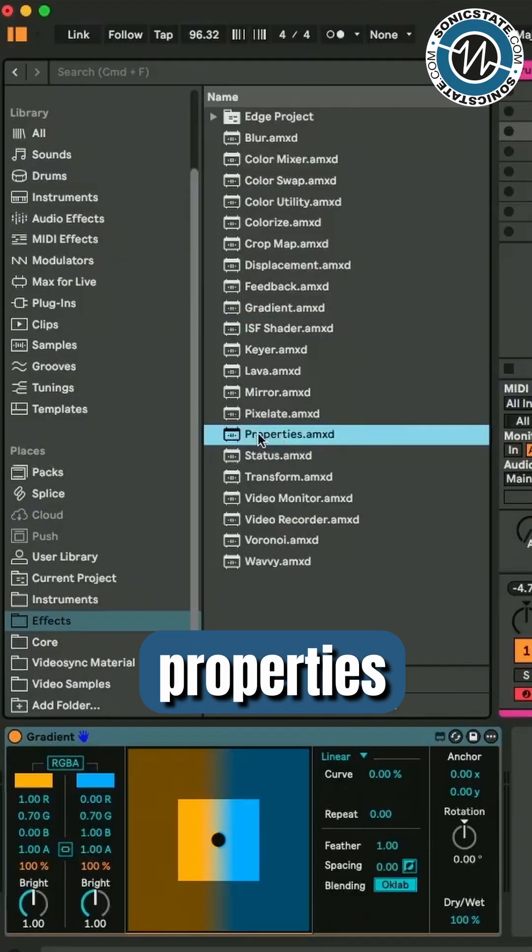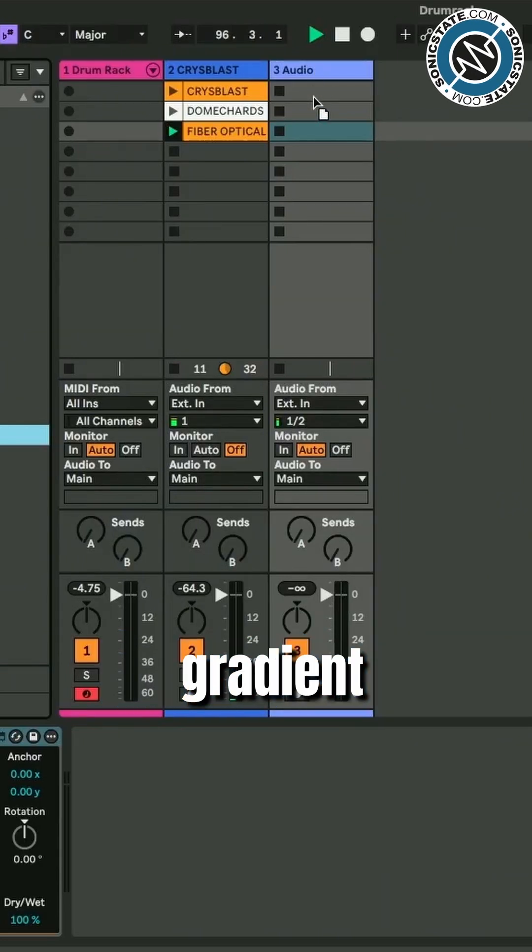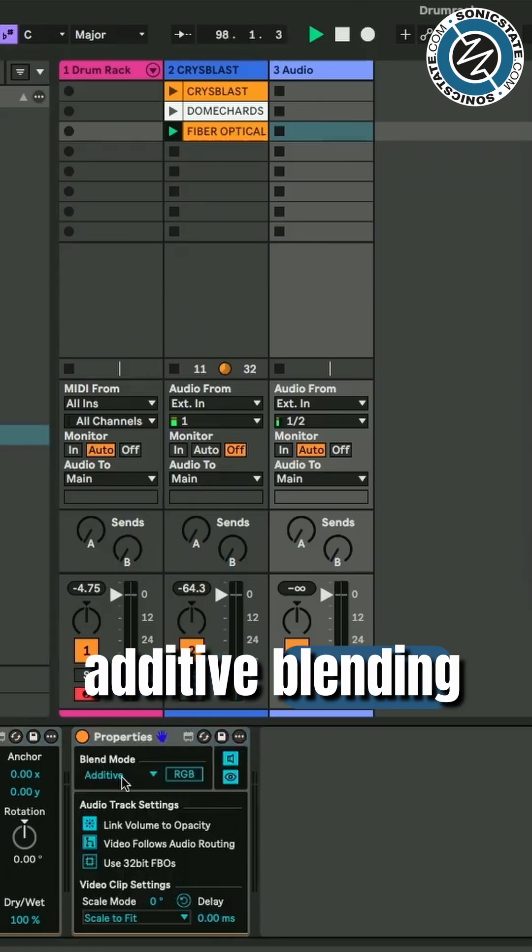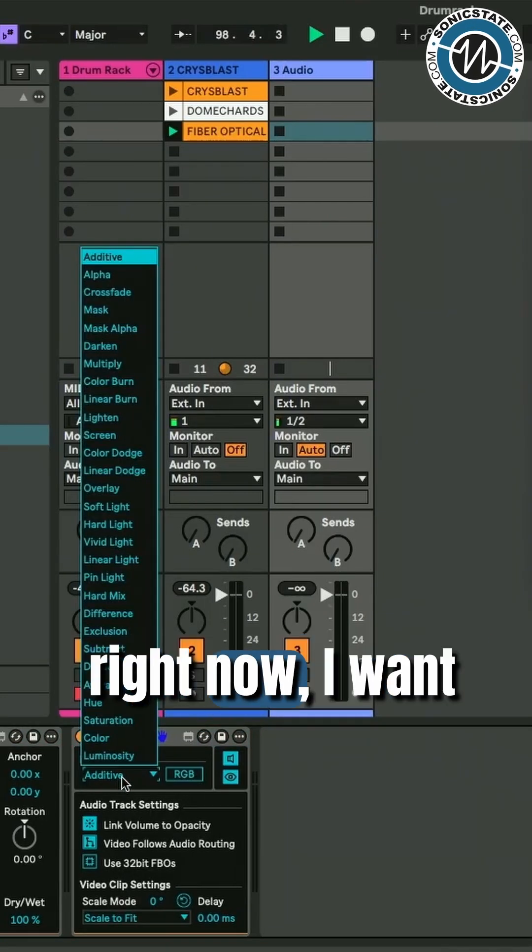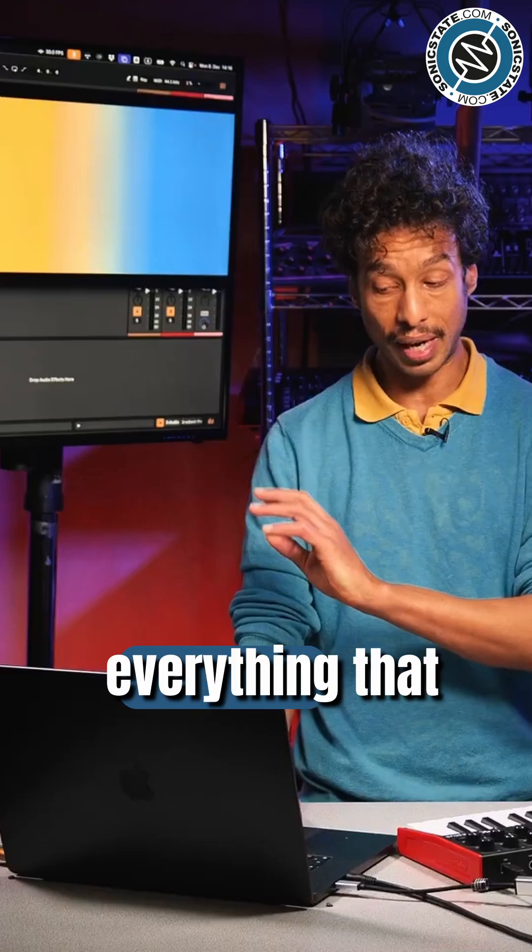So let us get the properties device here. We're gonna put it on this gradient track. And I say that instead of the additive blending mode, you can see that it's set to additive right now. I want to go to alpha blending.